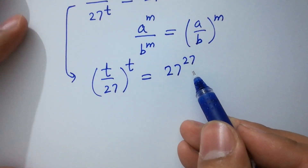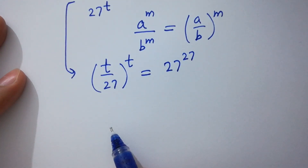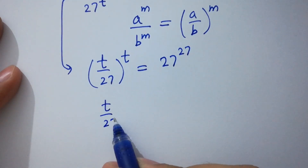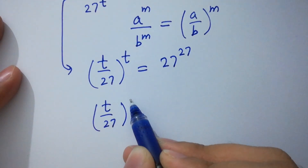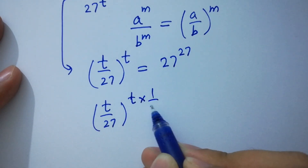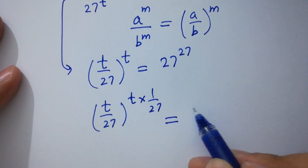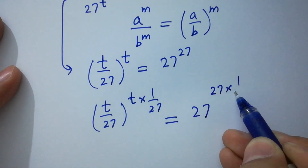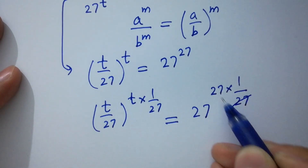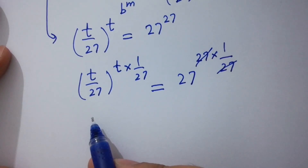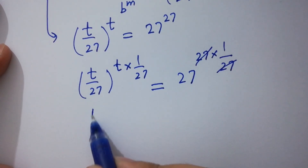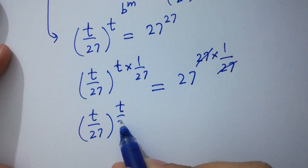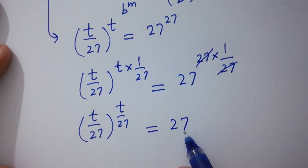To cancel this power 27, multiply by power 1 over 27 on both sides. t over 27 to the whole power t times 1 over 27 equals 27 to the power 27 multiplied by 1 over 27. Since 27 and 27 cancel, we get t over 27 to the power t over 27 equals 27.